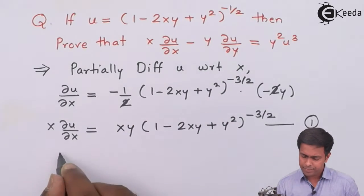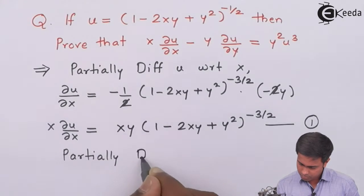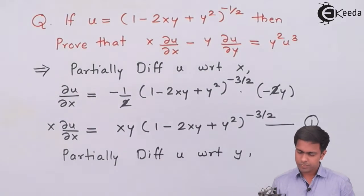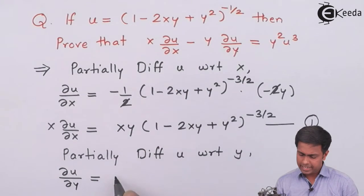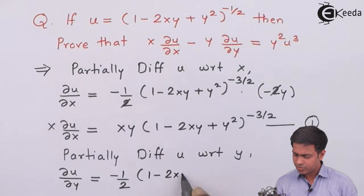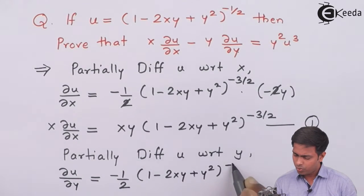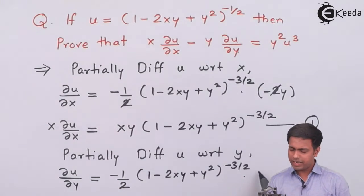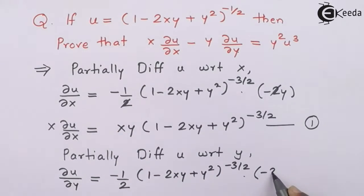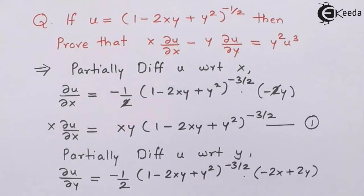Partially differentiating u with respect to y, we get ∂u/∂y equal to negative half times (1 minus 2xy plus y squared) raised to negative 3 by 2. For the inner derivative with respect to y: the derivative of 1 is 0, negative 2x is constant so its derivative gives negative 2x times 1, and for y squared we get positive 2y. Taking 2 common from these two terms and cancelling with the half, and sending the negative sign inside, negative x becomes positive x and positive y becomes negative y, giving (x minus y) times that bracket term.